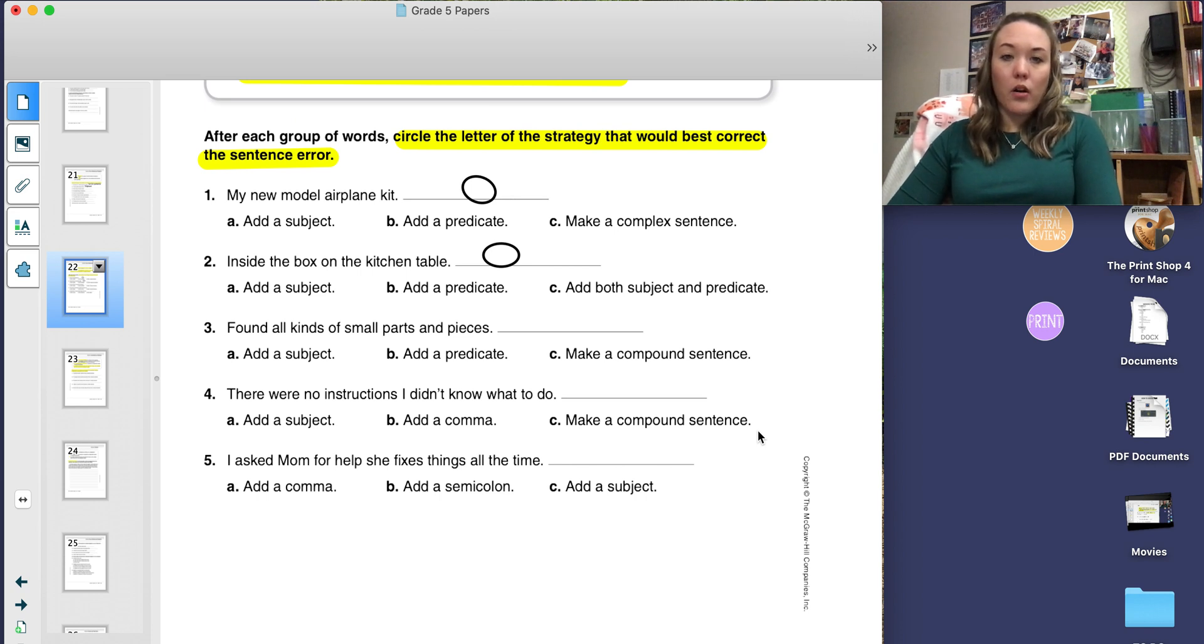Number one says, my new model airplane kit. That is a subject. It is missing a predicate. Therefore, I need to add a predicate. Number two says, inside the box on the kitchen table. That is a fragment. It's a dependent clause. Therefore, I need to add an independent clause to make this a complete sentence. Remember, an independent clause is a complete thought. So it is both a subject and a predicate. So to correct this, I need to do C, add both a subject and a predicate. You will need to complete three, four, and five.